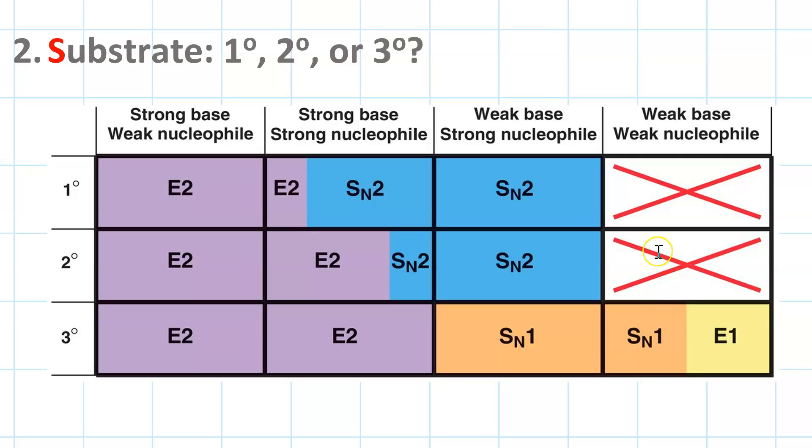If you have a reagent that is both a weak base and a weak nucleophile, the first step is loss of a leaving group. That means it's synthetically not practical to try to do these with primary substrates or secondary substrates. With tertiary substrates, you get a mixture of SN1 and E1. Now, if you do it at high temperature, you'll favor the E1 product, and at low temperature, you'll favor the SN1 product.